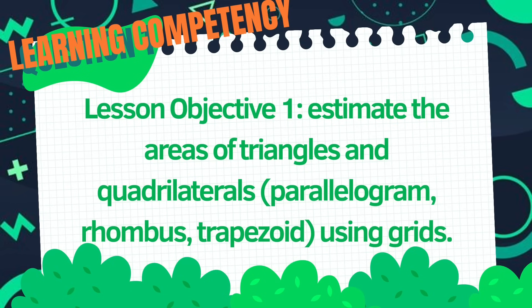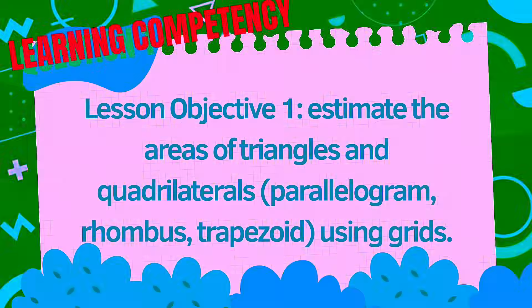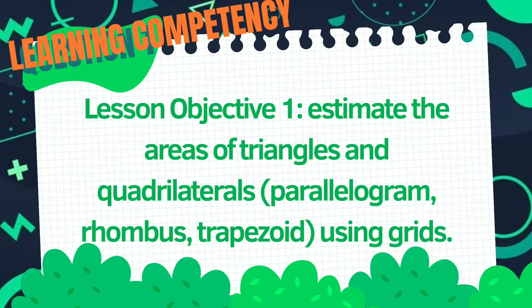We have here our learning competency and learning objective: estimate the areas of triangles and quadrilaterals. So we have the parallelogram, the rhombus, and the trapezoid using grids.